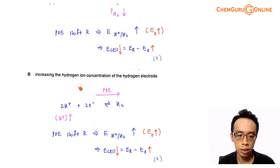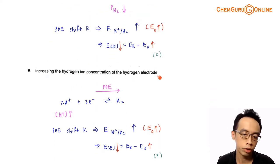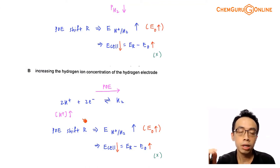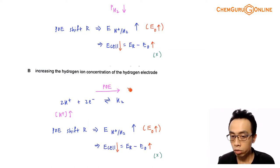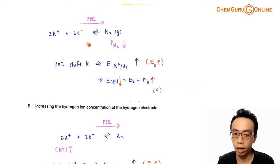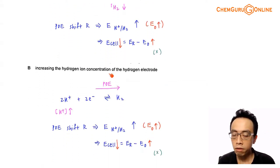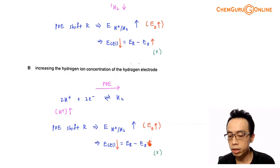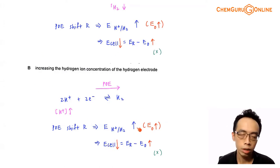Option B: increasing the hydrogen ion concentration of the hydrogen electrode. Using the same half-equation 2H⁺ + 2e⁻ → H₂, increasing [H⁺] shifts equilibrium to the right, favouring reduction. The E value increases, so E oxidation increases. When E oxidation is bigger, E cell decreases. Therefore option B is also not the correct answer.